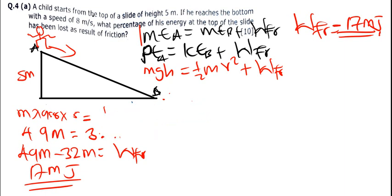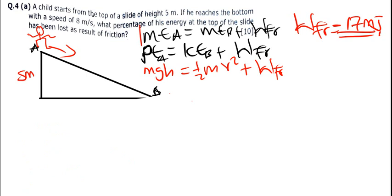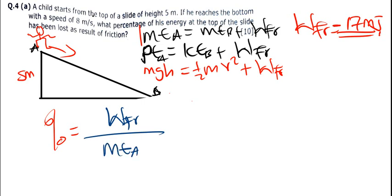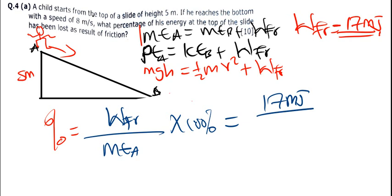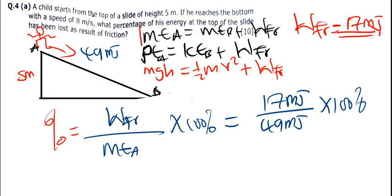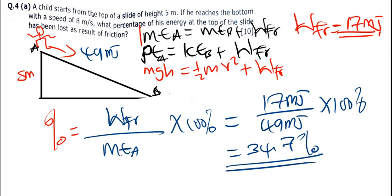The percentage equals the work done by friction divided by the initial mechanical energy at A, times 100%. So: (17mJ ÷ 49mJ) × 100% = 34.69%, which is 34.7%. That is it for this question.